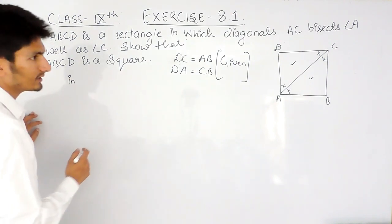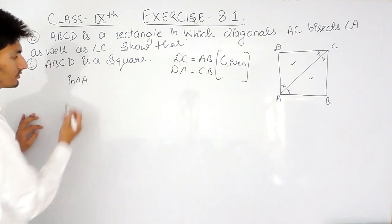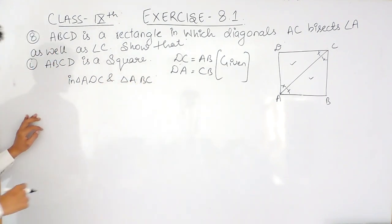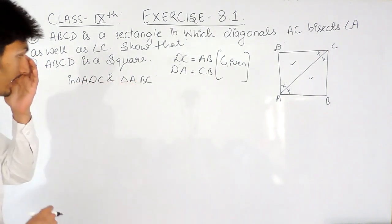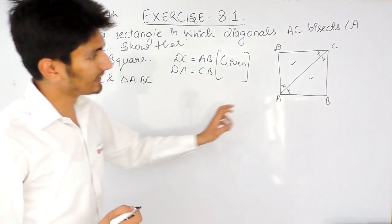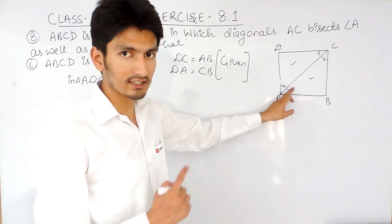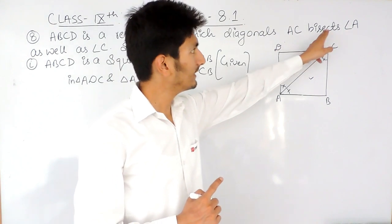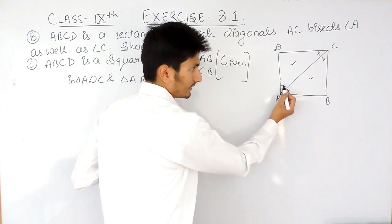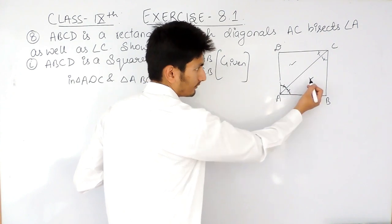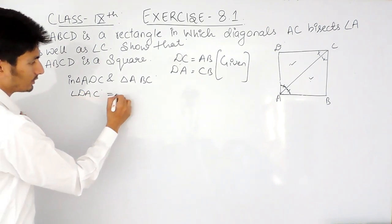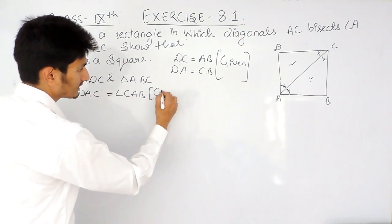Let's work in triangle ADC and triangle ABC. This angle is equal to this angle — this is given because diagonal AC is bisecting angle A, dividing it into two equal parts. So angle DAC is equal to angle CAB. This is our first given condition.